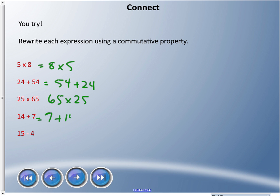Another expression for a commutative property for 5 times 8 is 8 times 5. We have 24 plus 54, 25 times 65, 14 plus 7, and 15 minus 4. Does that one work? We've been working with the commutative property of addition and multiplication, and you can see that we're just rewriting it in the opposite order for all of these.